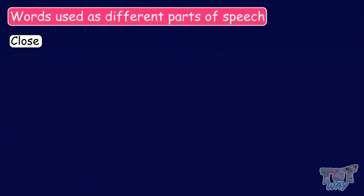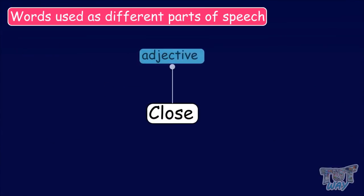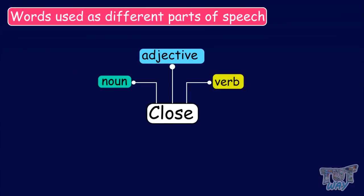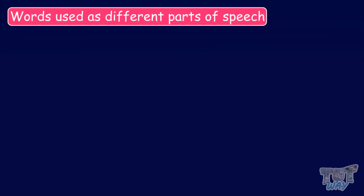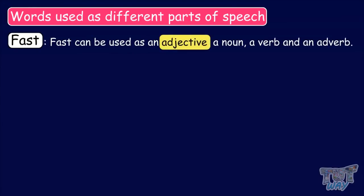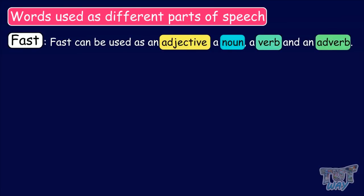So, the word close can be used as an adjective, a noun, and a verb. Our next word is 'fast'. Fast can be used as an adjective, a noun, a verb, and an adverb.